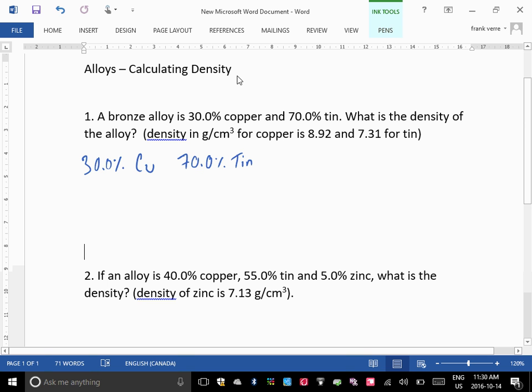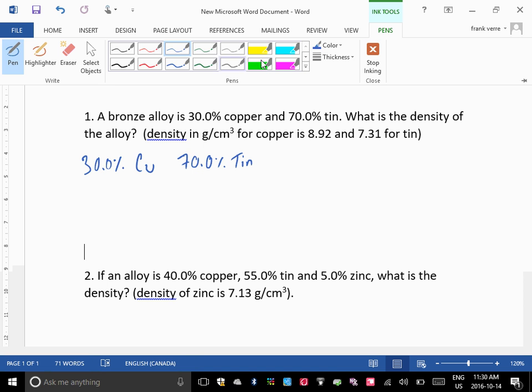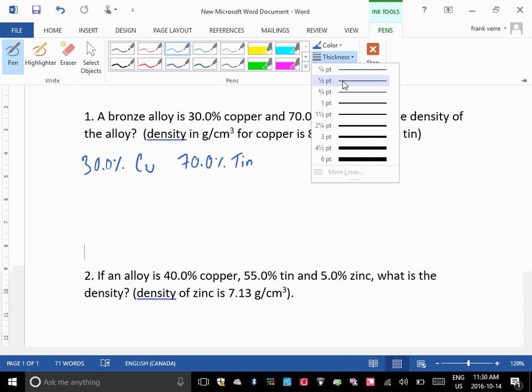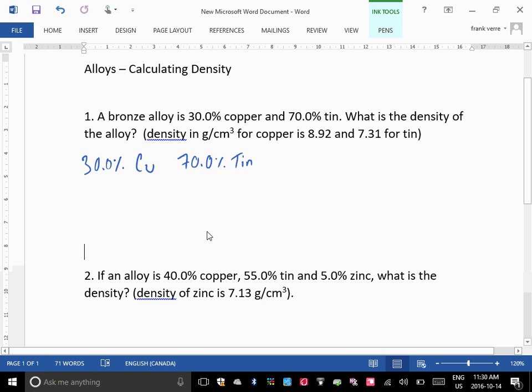Now, the density of this alloy would be based on, if you think about it, would be based on the fact that 30% of it is copper and 70% of it is tin.